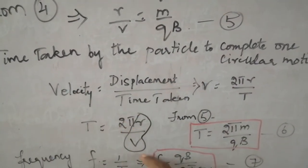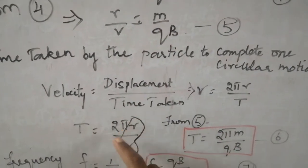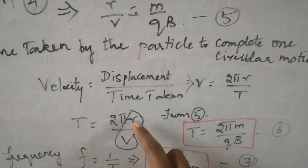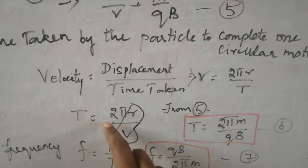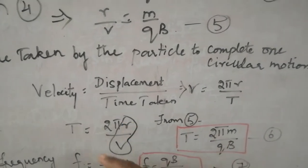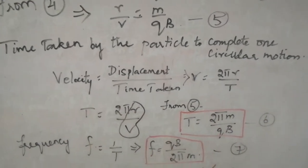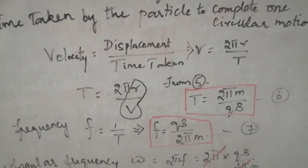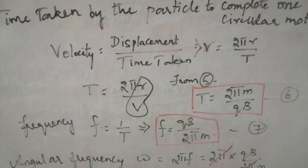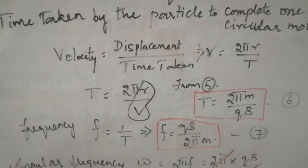Now in equation number 5, we have already found out the value of R by V. So substitute this R by V here in this equation. So instead of R by V, I have to write it as M by QB. So my value of time taken is given by T is equal to 2πM by QB. This is the time taken by the particle to complete one circle. Let this be equation number 6.